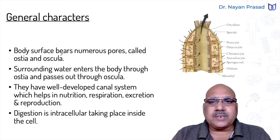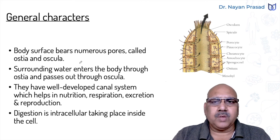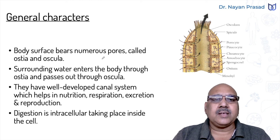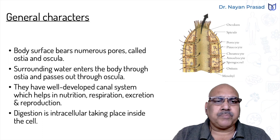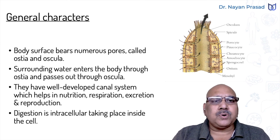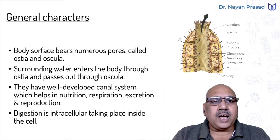The body surface bears numerous pores called ostia and oscula. Due to the presence of numerous pores, they are often called pore-bearing animals. The small pores present in the body wall are called ostia (singular: ostium), and these are for the entry of water current. The large pore — which may be one or many — is called osculum (singular), oscula (plural), and is for the exit of water current.